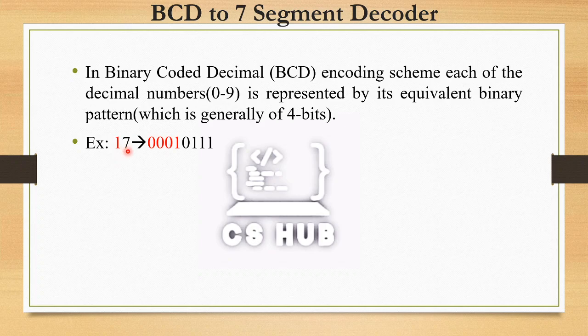In BCD, one decimal digit equals 4 bits. So for decimal 17: the digit 1 becomes 0001 and the digit 7 becomes 0111, giving the 8-bit BCD representation 00010111. This is the key concept of BCD — Binary Coded Decimal — where each decimal digit is individually coded into 4 bits.